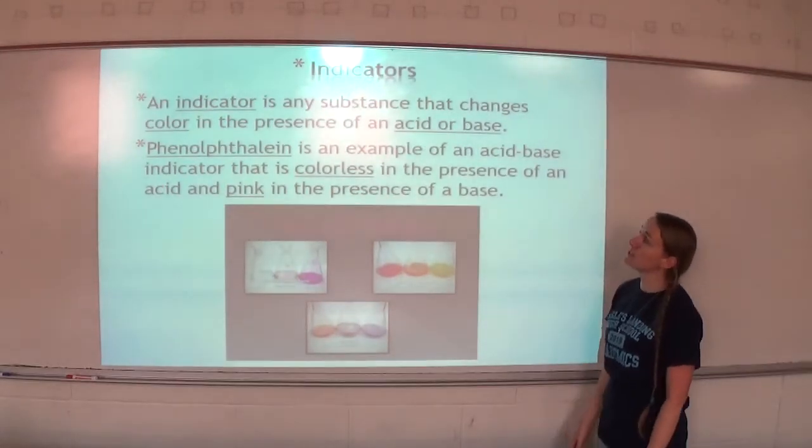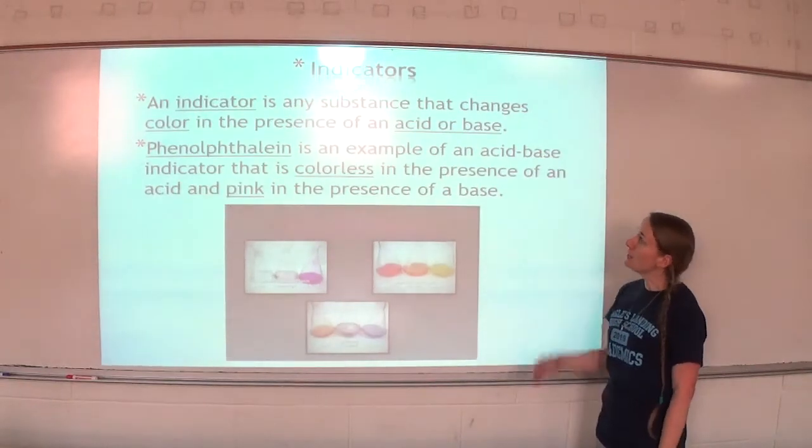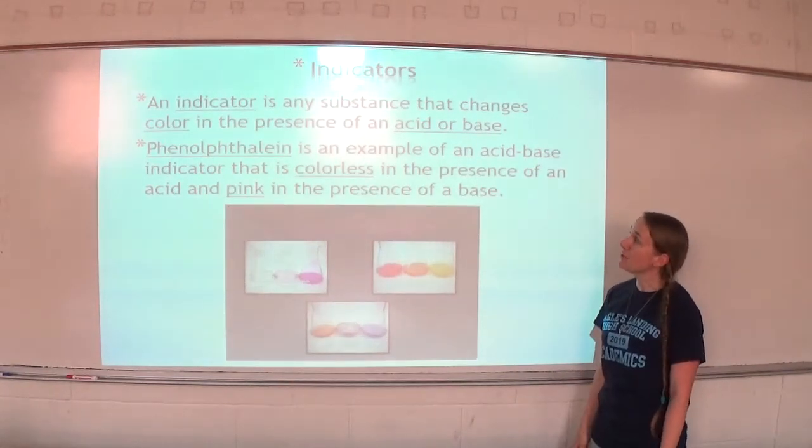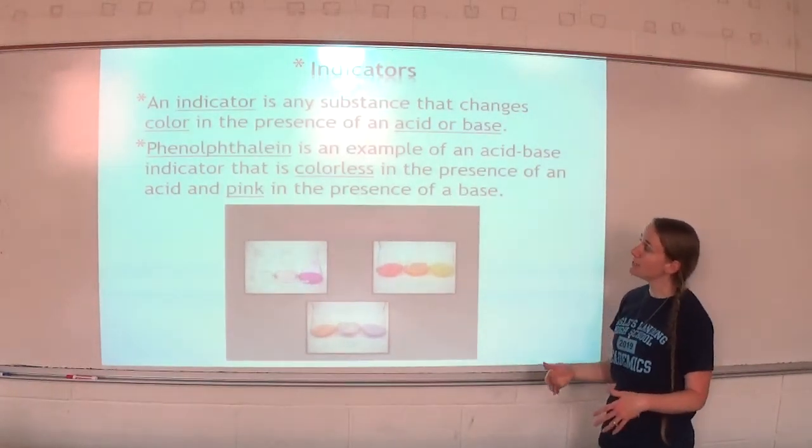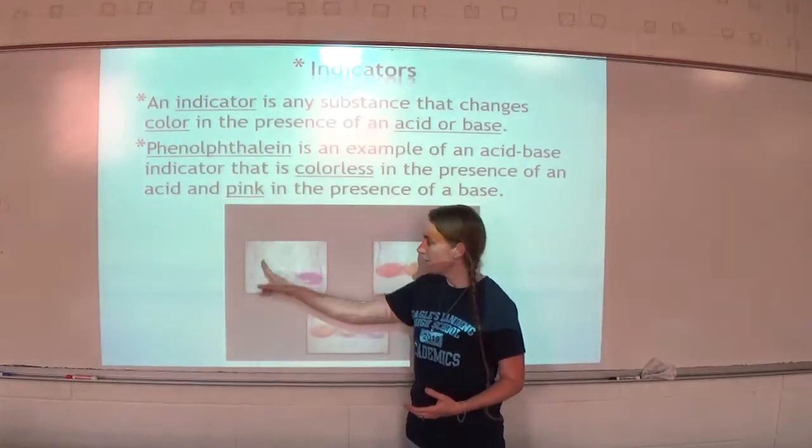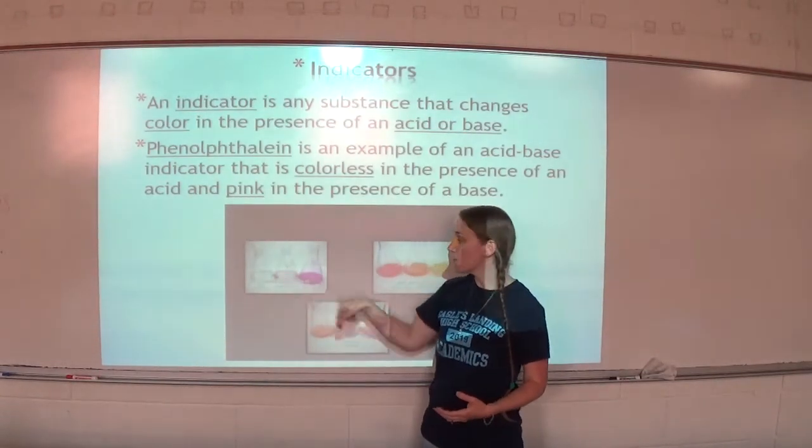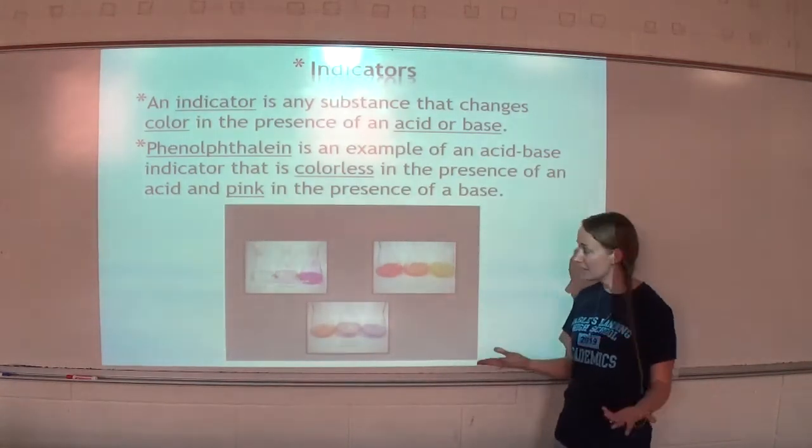An indicator is any substance that changes color in the presence of an acid or a base. Phenolphthalein is an example of an acid-base indicator that is colorless in the presence of an acid and pink in the presence of a base. Here's an example of phenolphthalein. We have acid, neutral, base. You can see it's colorless in the acid, and it slowly turns pink as you get to the basic side.